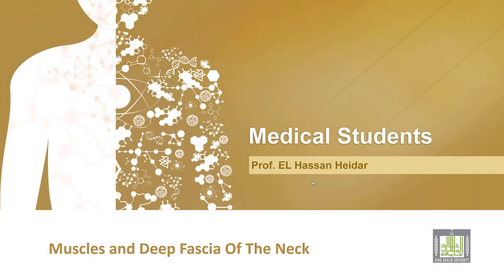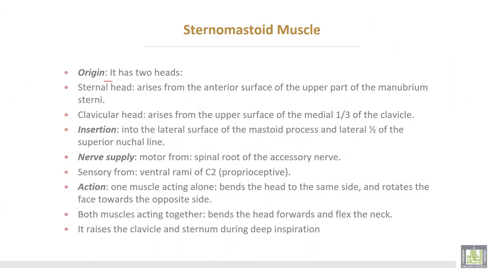Muscles and the deep fascia of the neck. The first muscle is the sternomastoid muscle. It takes origin by two heads: the sternal head arises from the anterior surface and the upper part of the manubrium sterni, while the clavicular head arises from the upper surface of the medial third of the clavicle. Insertion is into the lateral surface of the mastoid process of the skull and the lateral half of the superior nuchal line.